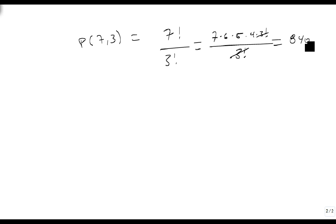So there are 840 different ways that we could get a 1st, a 2nd, and a 3rd place contestants if there were 7 total contestants. And so this becomes very useful for us as we count permutations.